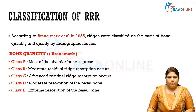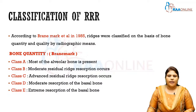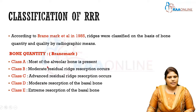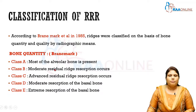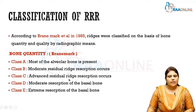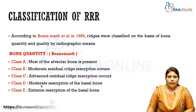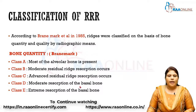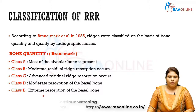Brainmark in 1985 classified the ridges based on the quality and quantity of the bone by radiographic means. Based on bone quantity, the classifications are designated as A, B, C, D and E. In Class A, most of the alveolar bone is present. In Class B, there is moderate residual ridge resorption. In Class C, advanced residual ridge resorption takes place. In Class D, there is moderate resorption of the basal bone. And in Class E, which is the extreme classification, there is extreme resorption of the basal bone.